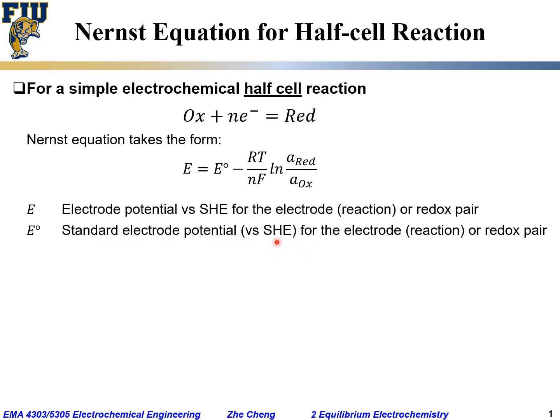a_Red represents activity for the reduced species—and remember, it will be unitless. a_Ox means activity for the oxidized species. Keep in mind both activity numbers should be unitless, which means they do not have units.